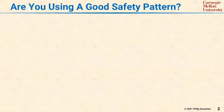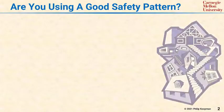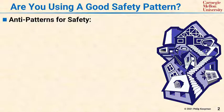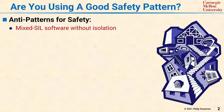Are you using a good safety pattern, or does your safety pattern for your system look like this crazy house? Here are some signs that you have a problem with the safety architecture of your system. First, if your system has multiple safety integrity levels — so it's a mixed-SIL system — but it does not have hardware isolation between the SILs, that's a problem.